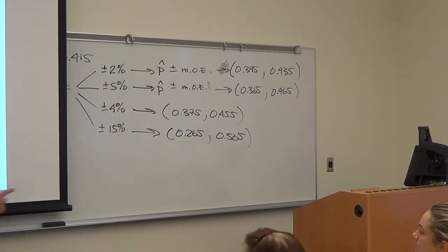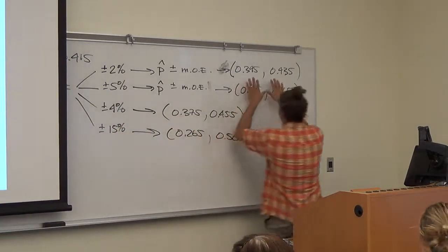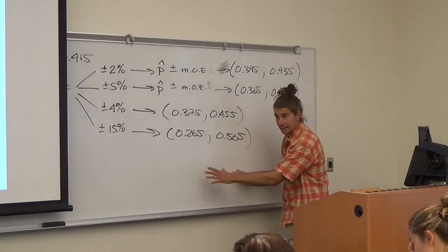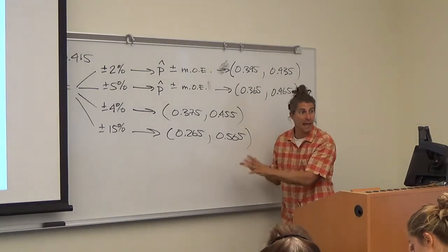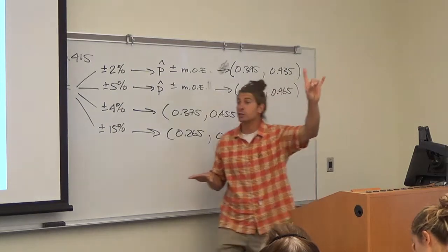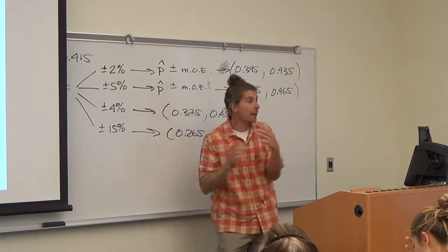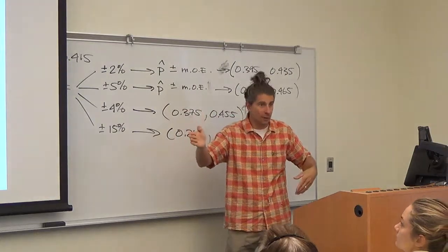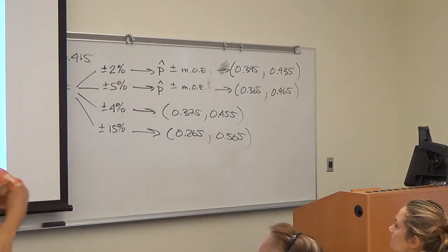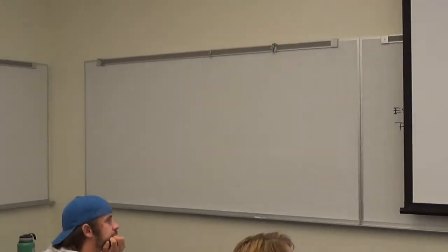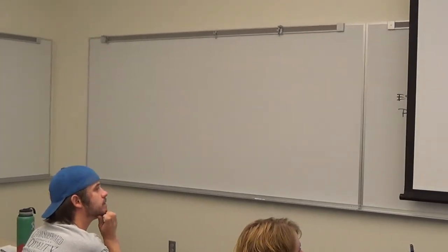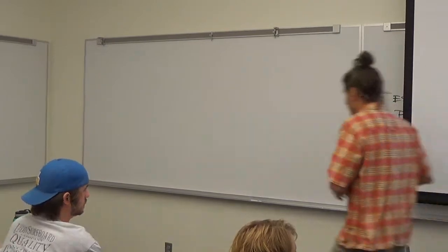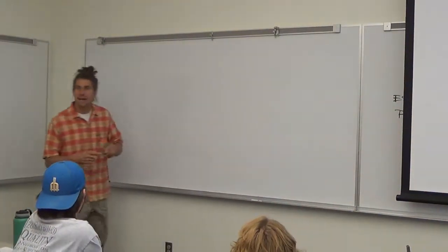Do any of those intervals give a result that says our initial guess that spinning a coin was the same as flipping a coin might be wrong? All of them with the last one. Why? Because they don't reach 50%. Oh my goodness. Look at those intervals. These intervals represent the percentage of time you get heads in the population of spinning coins.